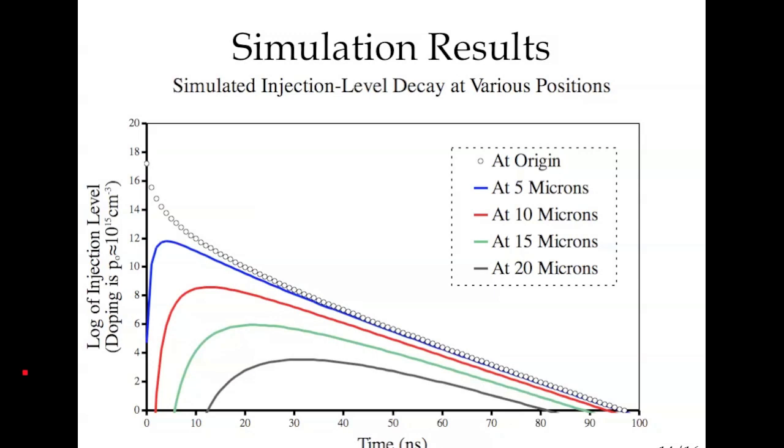And what we notice actually, if we look at the injection level at various positions radially at the surface, is that we get very different results if we were to measure the decay of that injection level at that position. And we see that actually, as we move away from the origin, the results get worse.